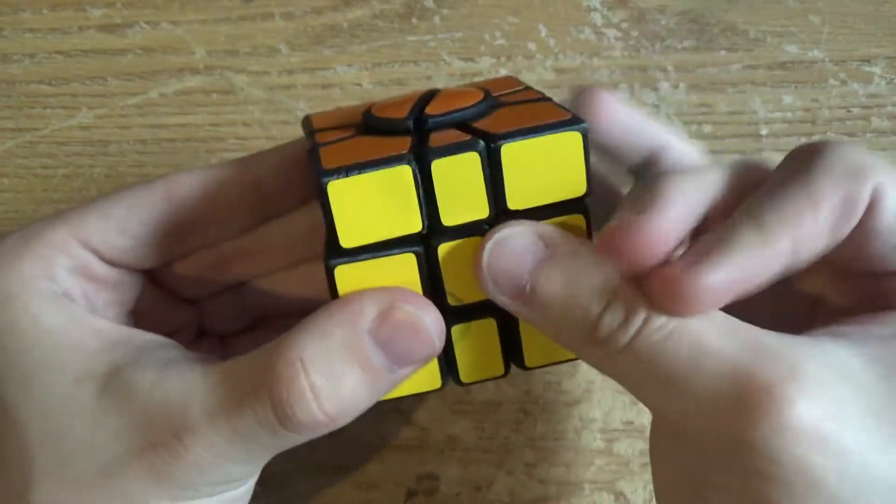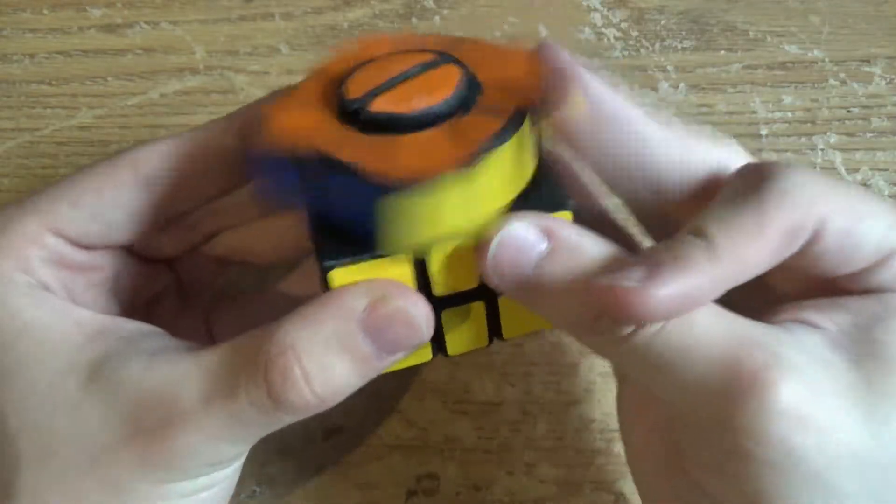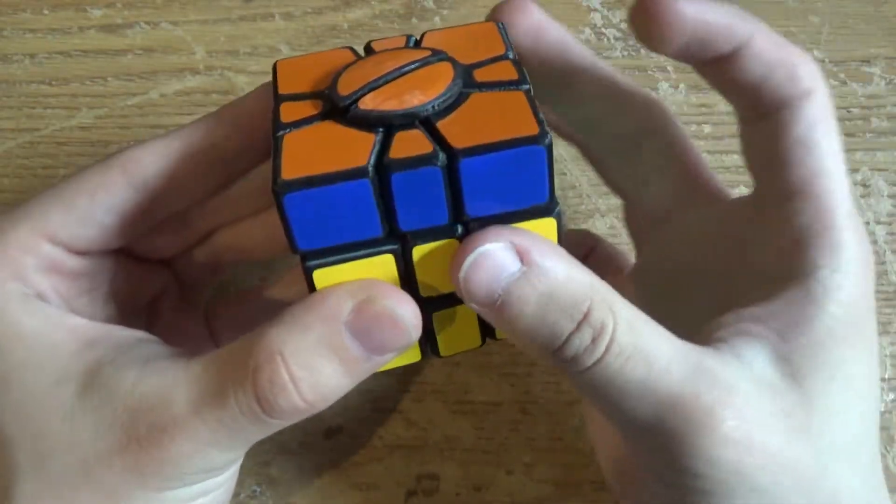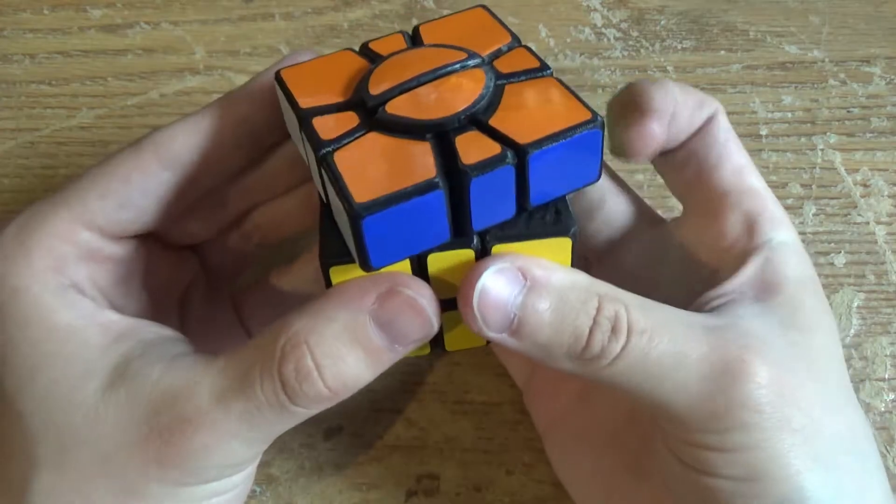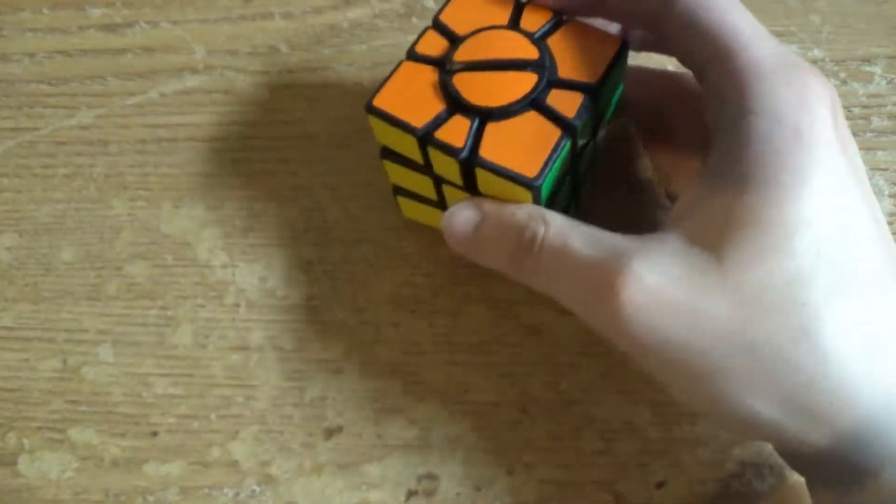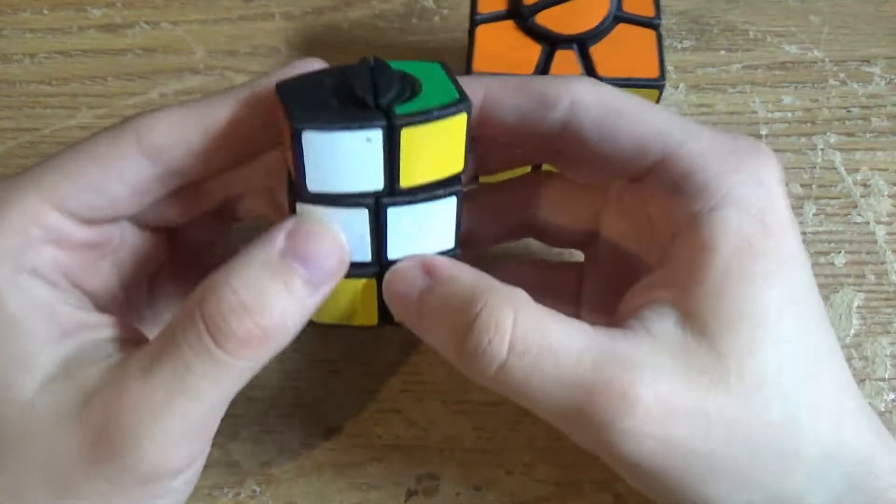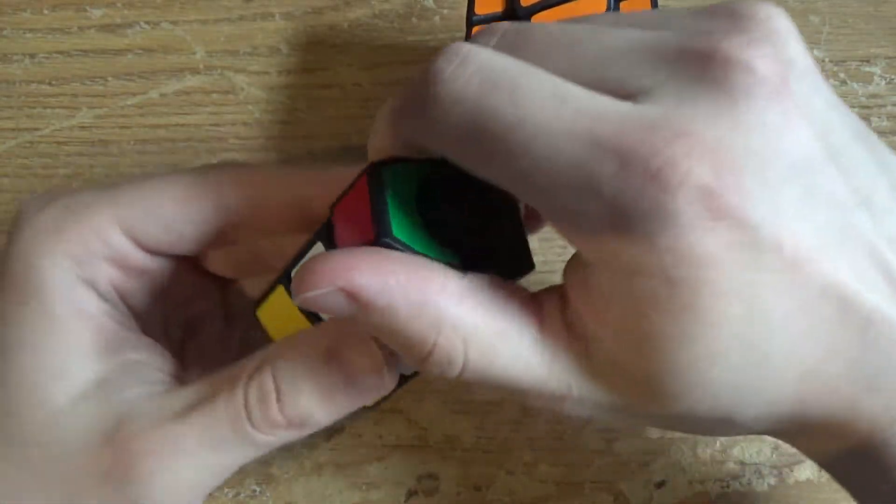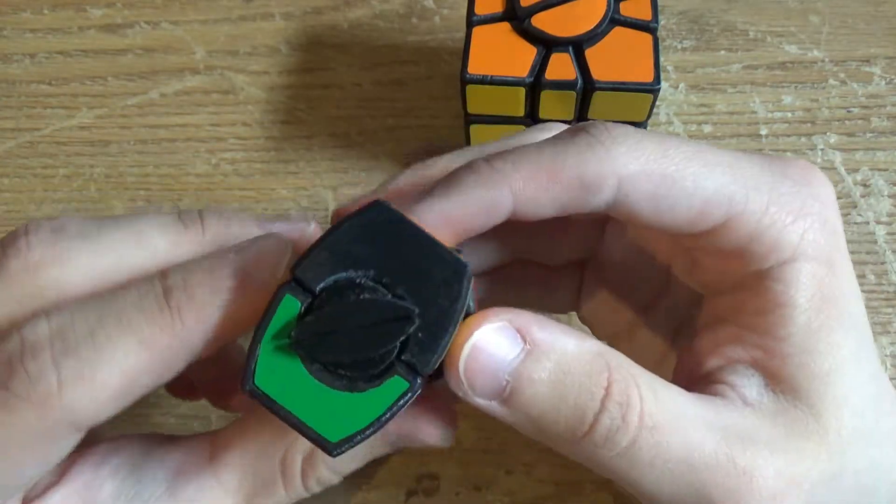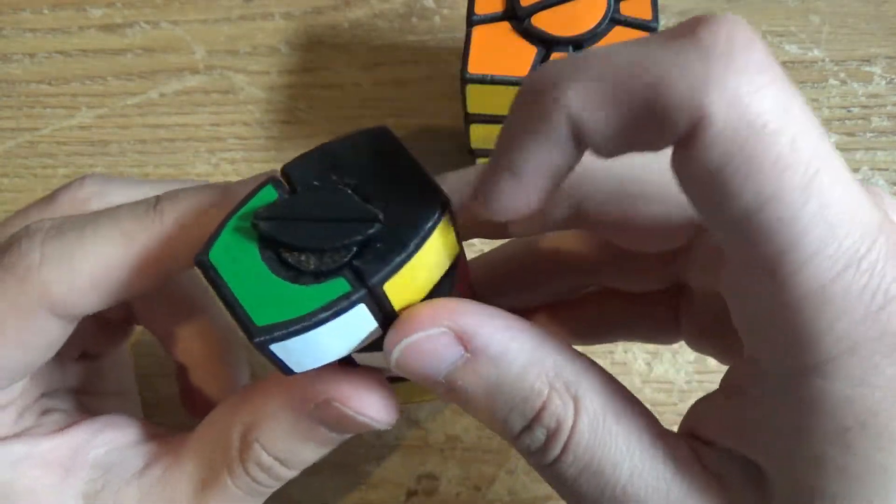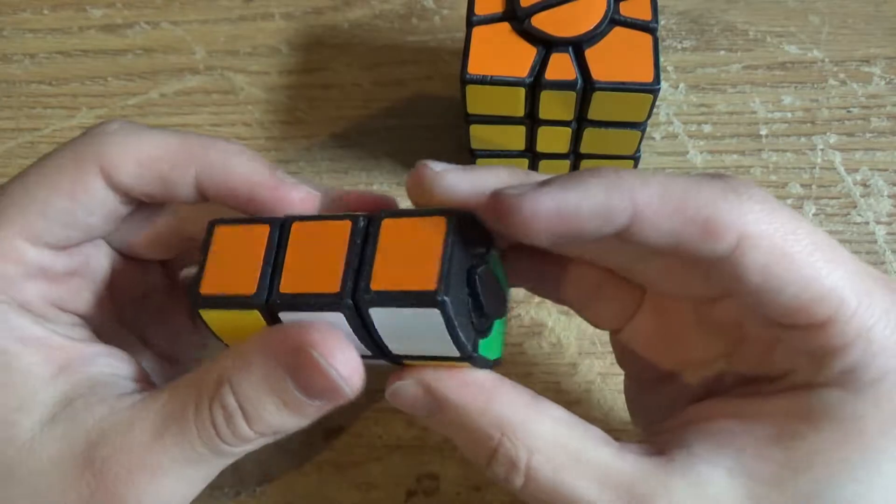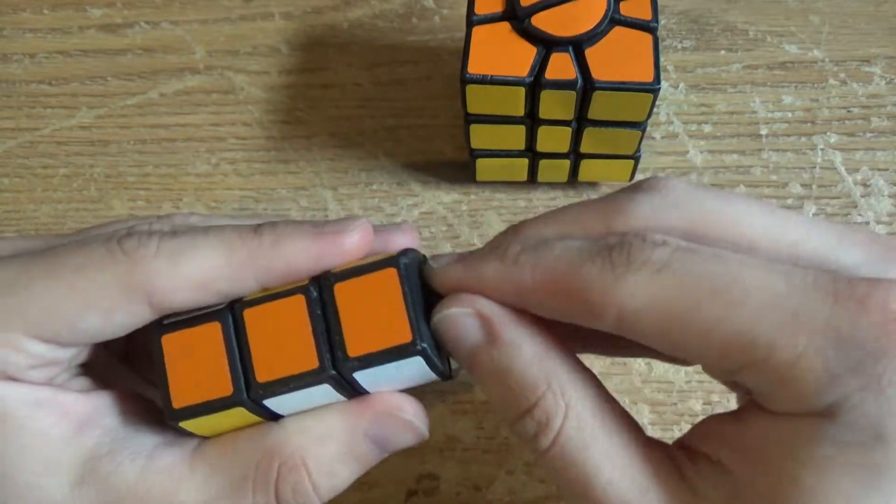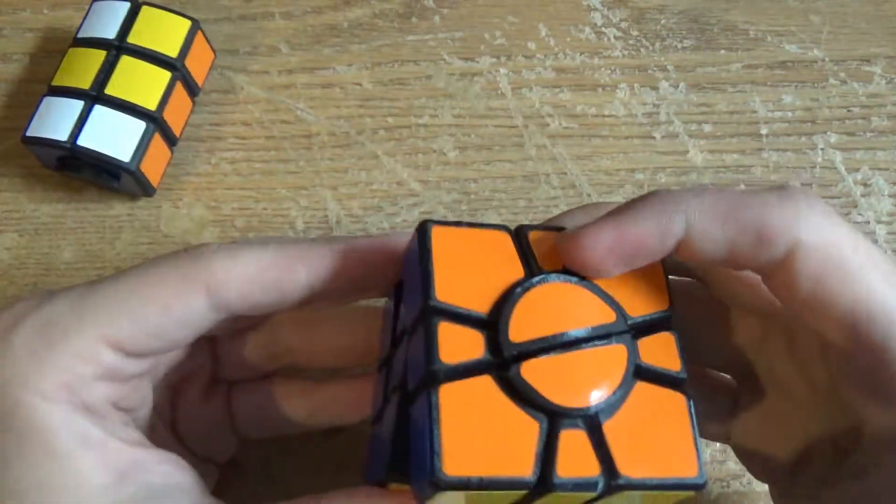So how does it turn? Really surprisingly well. Like, I wasn't expecting it to actually turn this well. It turns significantly better than the smaller puzzle that has basically the same mechanism. This is the sliding 1x2x3. And I think that might be because I didn't really sand this down, which just goes to show that sanding makes a huge difference.